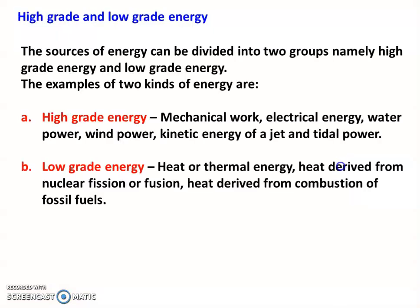High-grade energy and low-grade energy. We know there are different forms of energy — mechanical energy, kinetic energy, potential energy, heat energy, electric energy. All energy can be classified into two categories: high-grade energy and low-grade energy. The sources of energy can be divided into two groups, namely high-grade energy and low-grade energy.